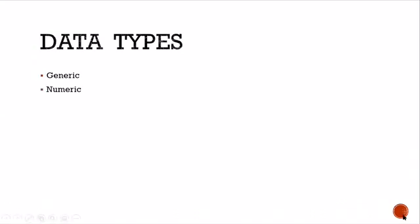First of all, what is a data type? As the name itself suggests, it's a type of the data. In the process of automation while developing robots, we deal with a huge amount of data. Every data is quite different in its unique way, so it's our responsibility to understand what type of data it is. UiPath supports different types of data: generic data, numeric data, boolean, string, date and time, and collection. These are the different data types we're going to see before heading into the practical demo.